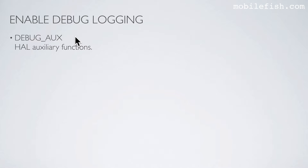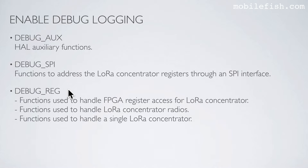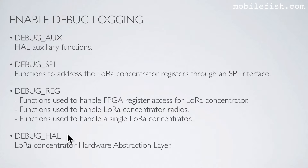Set this flag to enable debug logging for HAL auxiliary functions. Set this flag to enable debug logging for functions to address the LoRa concentrator registers through an SPI interface. Set this flag to enable debug logging for functions used to handle FPGA register access for LoRa concentrator, for functions used to handle LoRa concentrator radios, and for functions used to handle a single LoRa concentrator. Set this flag to enable debug logging for LoRa concentrator hardware abstraction layer.